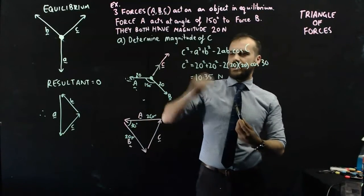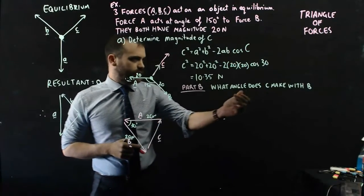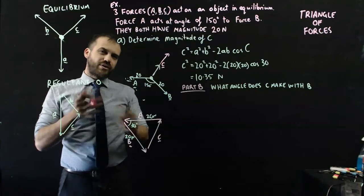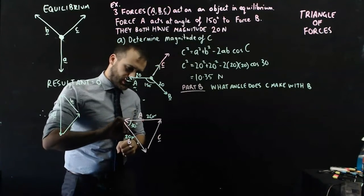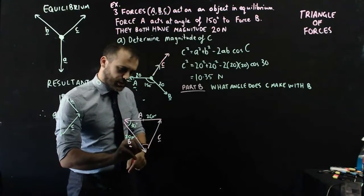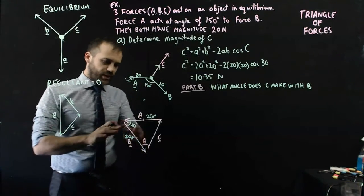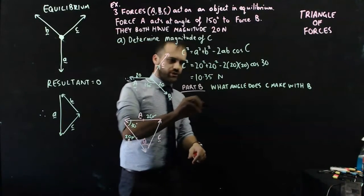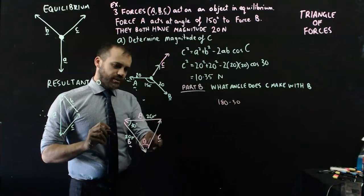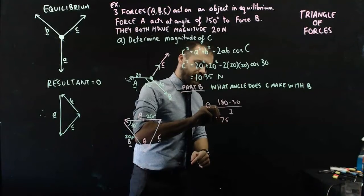10.35 newtons is the magnitude of C. Of course, we could ask one more question here. What angle does C make with B? Look at our triangle for a minute. We're getting very lucky here, because this triangle is an isosceles triangle. So if that's 30 degrees, then this angle here... Be careful what that angle is. I'm just going to call that angle theta for now. That angle is going to be equal to the internal angles of a triangle, 180 minus 30. And then those are going to be equal, so I can just divide by 2. And that's going to be 75 degrees.